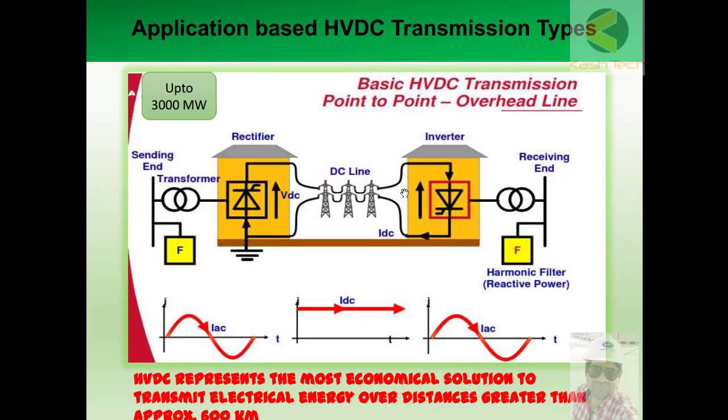HVDC presents the most economical solution to transmit electrical energy over distances greater than approximately 600 kilometers. If the line length is 600 kilometers or more, it becomes economical — as a general thumb rule — to connect two different networks using HVDC instead of HVAC. This is especially true when you need to supply more than 3000 megawatts over such distances.